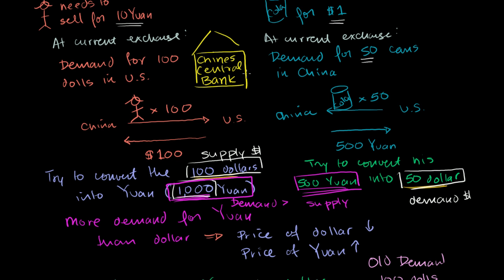So they literally could just print 500 yuan, and then convert that into dollars. Now, all of a sudden, we have $100 that are trying to be converted into roughly 1,000 yuan.